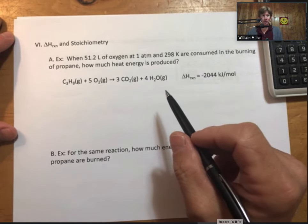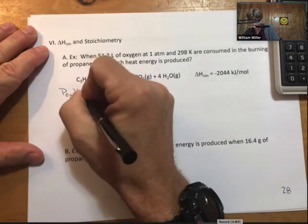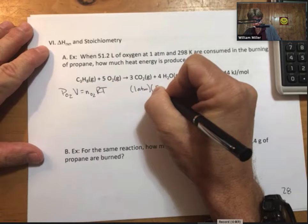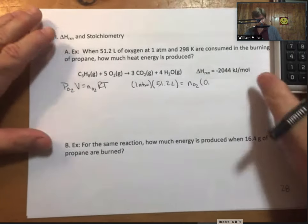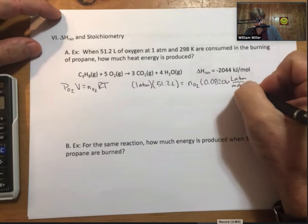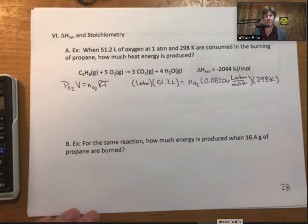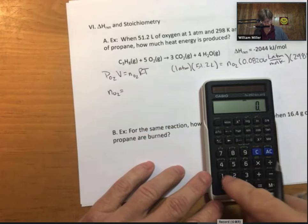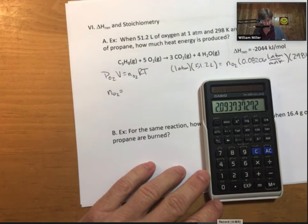Let's write our ideal gas law personalized for oxygen. I know my atmospheres, I know my volume. I don't know my moles. I know my ideal gas law constant, 0.08206 liter atmospheres per mole Kelvin. And I know my temperature. Solving for the moles of oxygen, I get 2.09 moles.